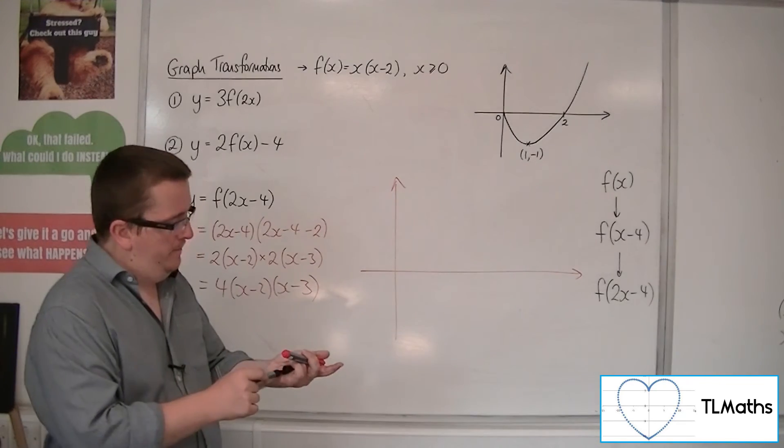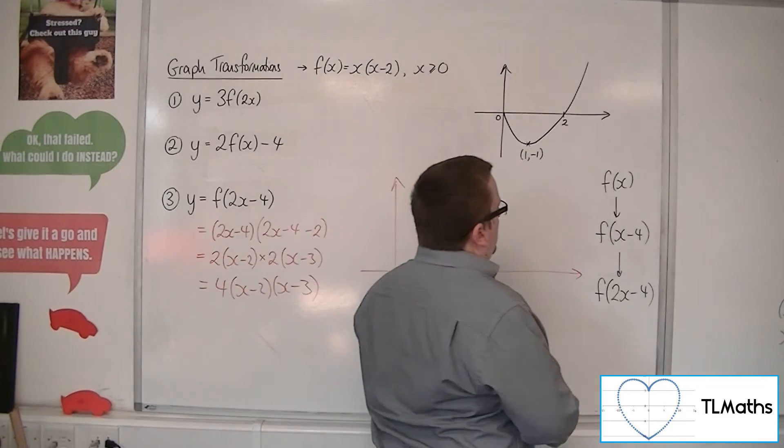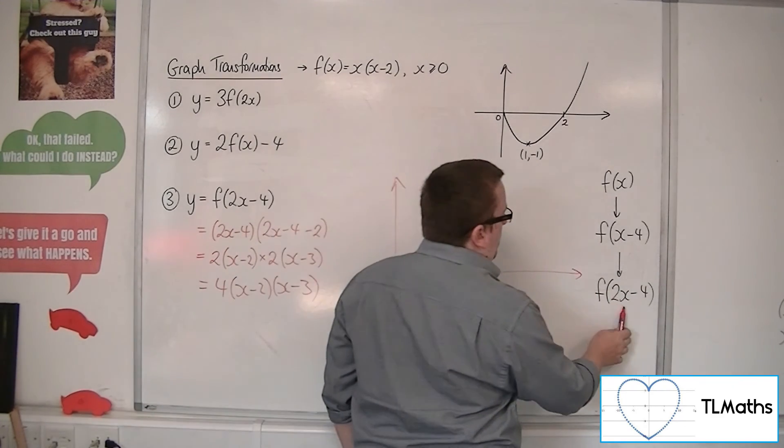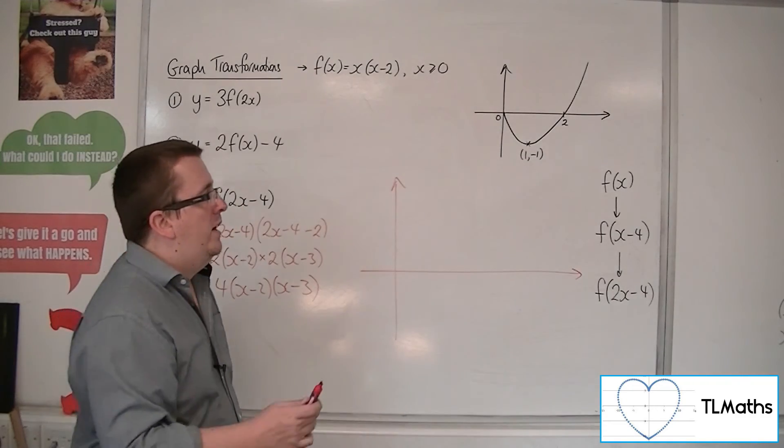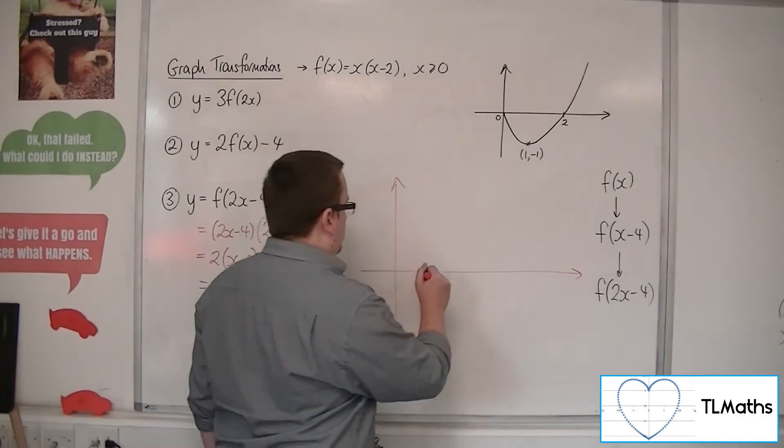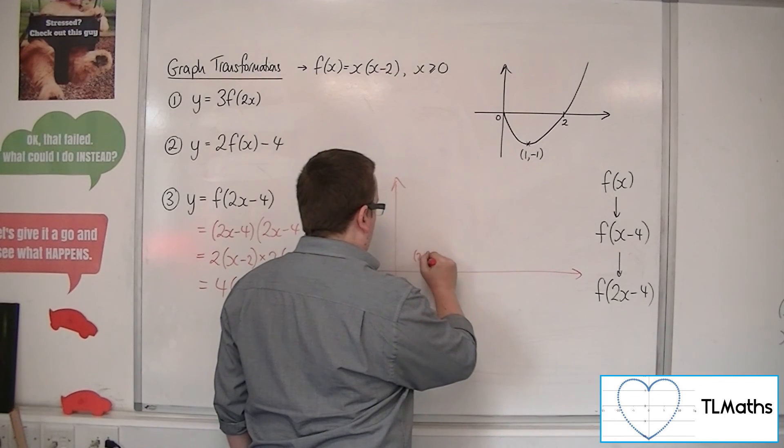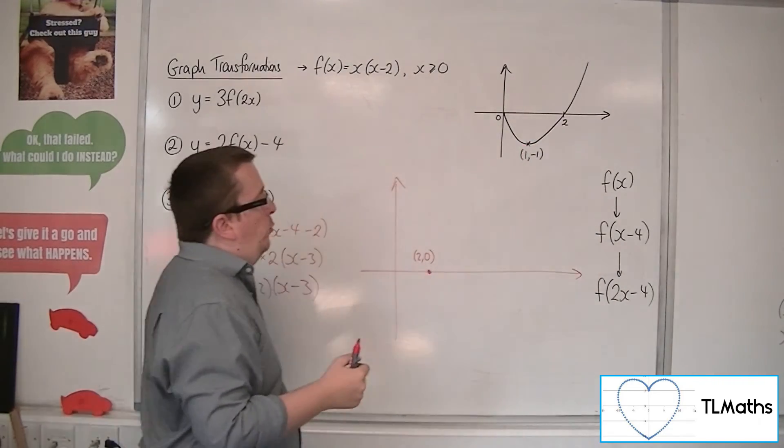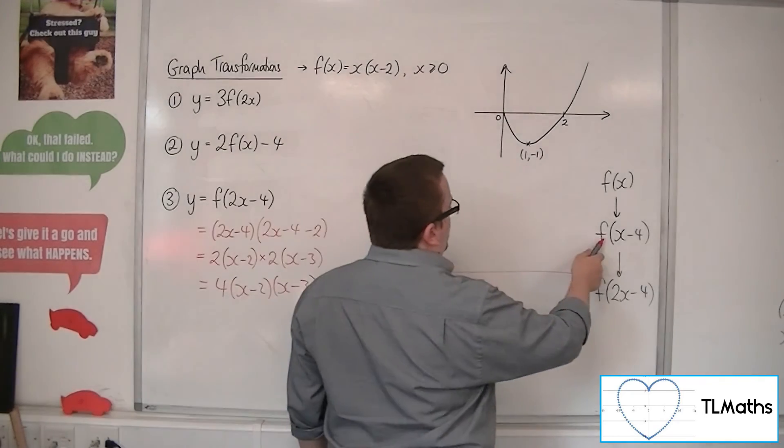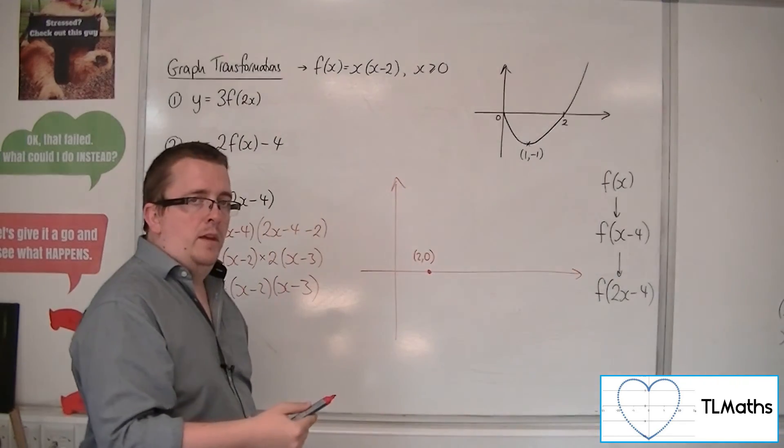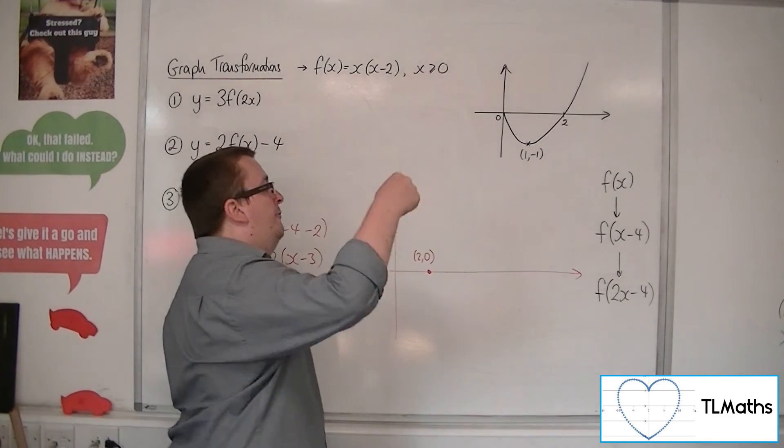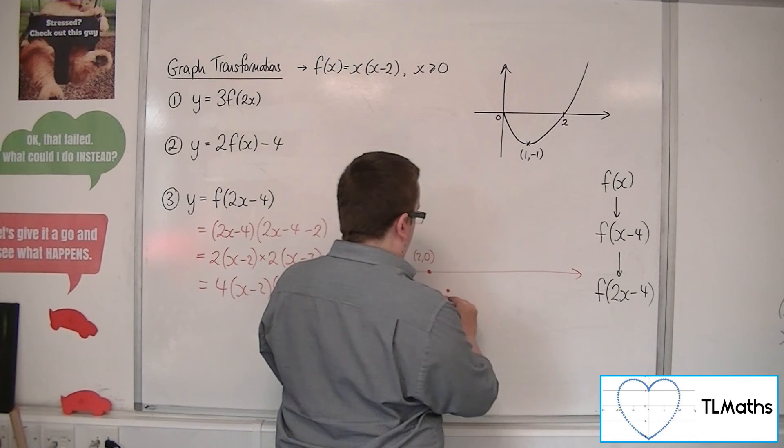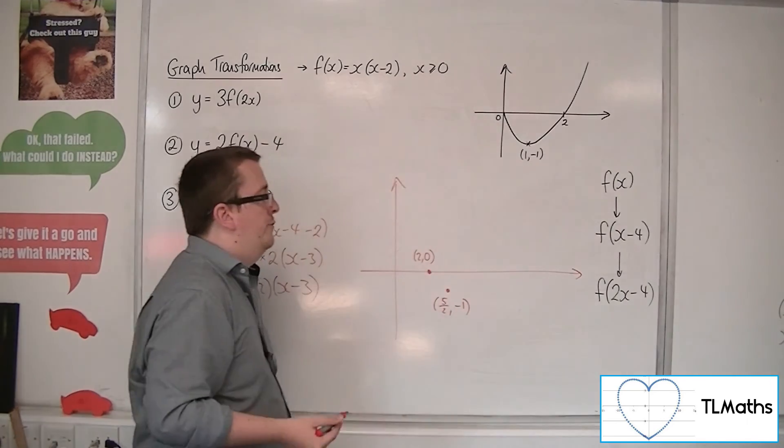If we take each point in turn, starting with 0, 0, when you apply the translation will move to 4, 0, and then when you apply the stretch by factor of a half will then appear at 2, 0. Now let's go with this point next, the 1 minus 1. Once it goes through the translation, we'll go to 5 minus 1, but once it goes through the stretch, we'll become 5 halves minus 1. So 5 halves minus 1 somewhere there, 2.5 minus 1.